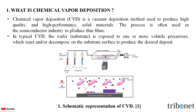The process is often used in the semiconductor industry to produce thin films. In typical CVD, the wafer or substrate is exposed to one or more volatile precursors which react and/or decompose on the substrate surface to produce the desired deposit. Here in figure 1, we can see the schematic representation of the chemical vapor deposition method.